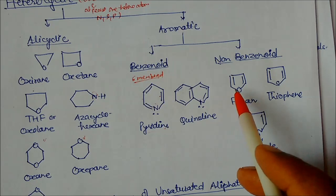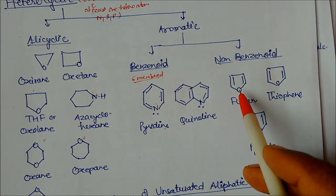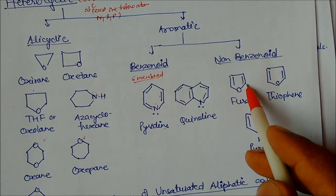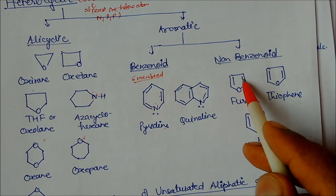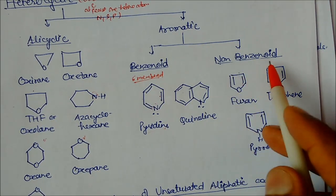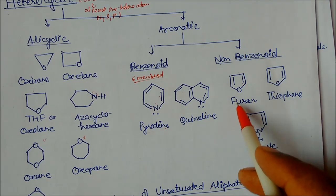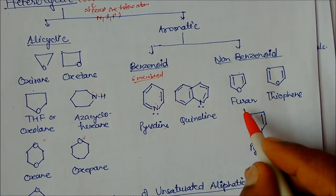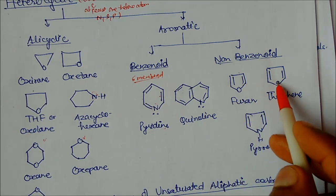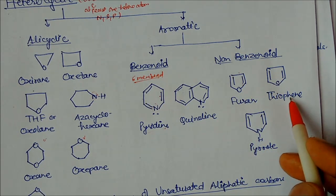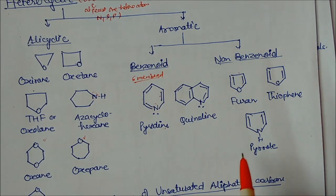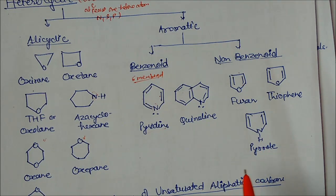For non-benzenoid aromatic heterocyclics, the ring is not six-membered but has alternating single and double bonds. Examples include furan (with oxygen), thiophene (with sulfur), and pyrrole (with nitrogen). These are non-benzenoid heterocyclic aromatic compounds.